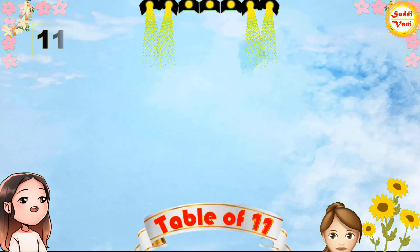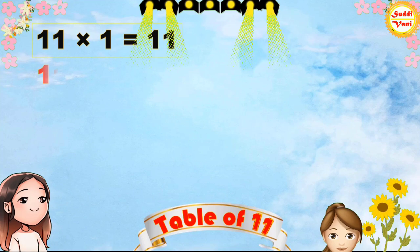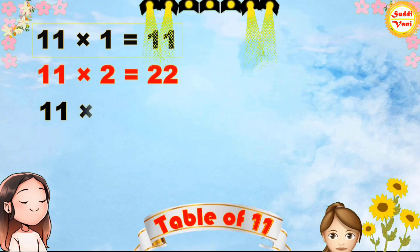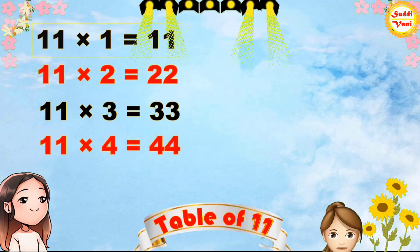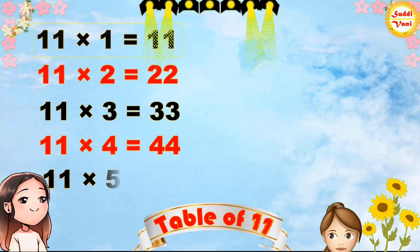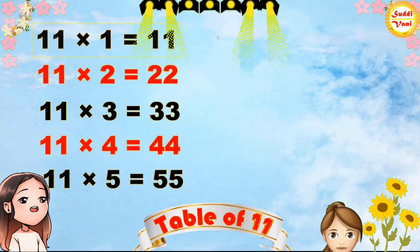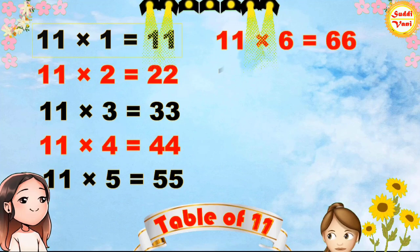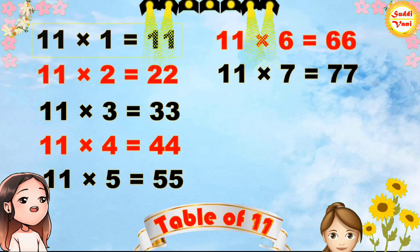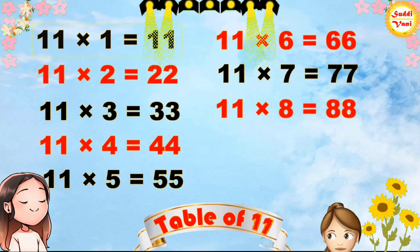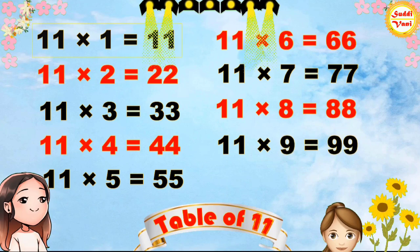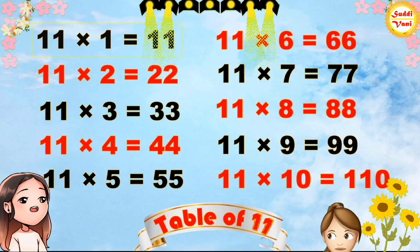Once again: 11×1=11, 11×2=22, 11×3=33, 11×4=44, 11×5=55, 11×6=66, 11×7=77, 11×8=88, 11×9=99, 11×10=110.